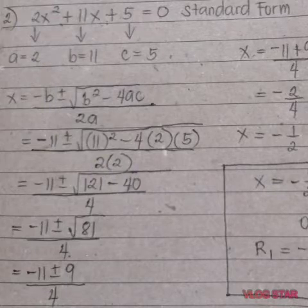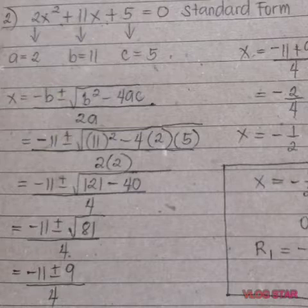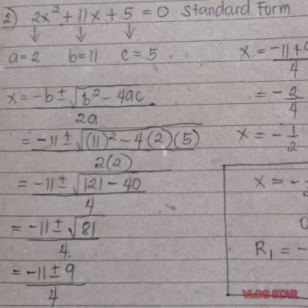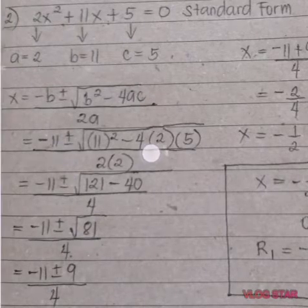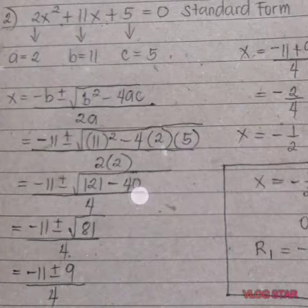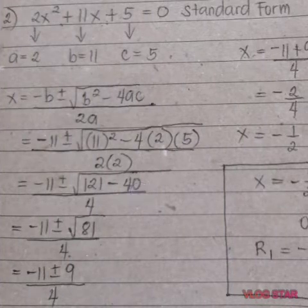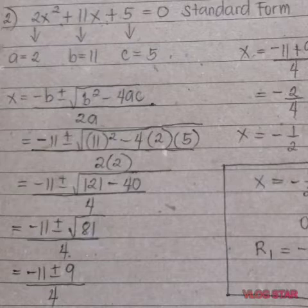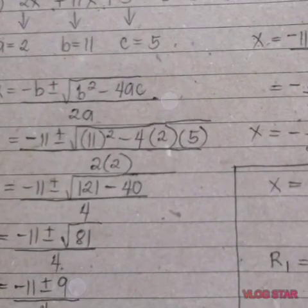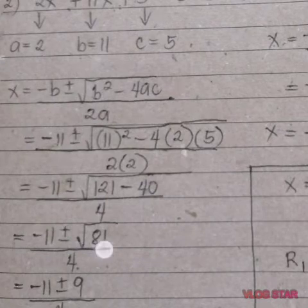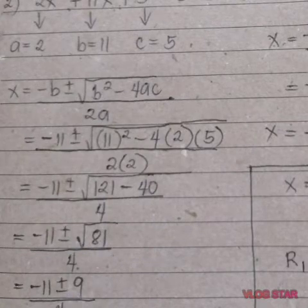And then solve: 11 squared is 121, and then negative 4 times 2 times 5 is negative 40. What is 121 minus 40? It is 81. So 2 times 2 is 4. What is the square root of 81? It is 9. So it is plus or minus 9, all over 4.